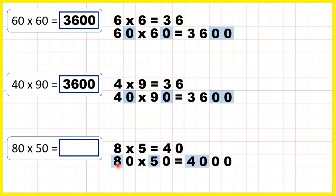That's because 8 times 5 is 40. But then, because there are two end zeros in the question, we need two end zeros in the answer.